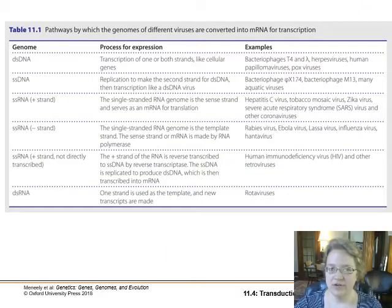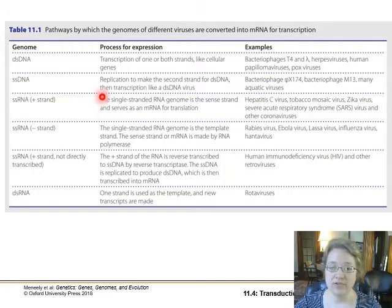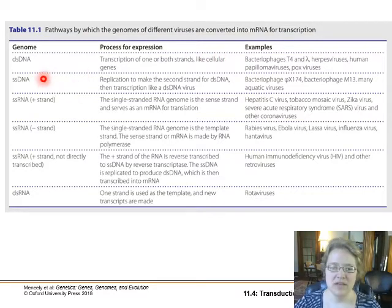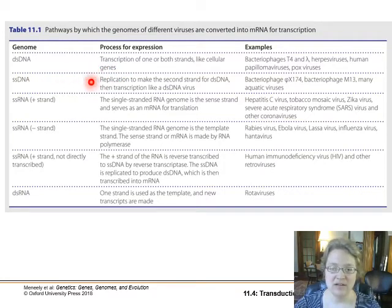Different types of viruses use different types of nucleic acids to trick the cell into making more nucleic acid and proteins for viral replication. We have double-stranded DNA, where it inserts the dsDNA and transcription occurs in the cytoplasm. We have single-stranded DNA, where genes for replication make a second strand to produce dsDNA, and then it acts like a double-stranded virus. Those two cases cover a lot of bacteriophages.